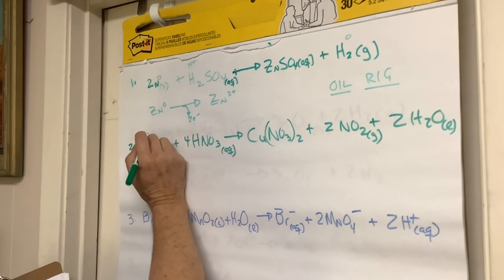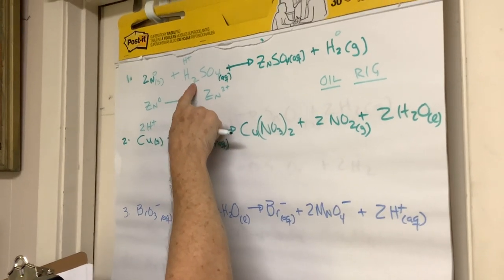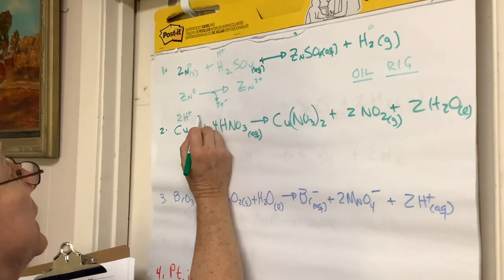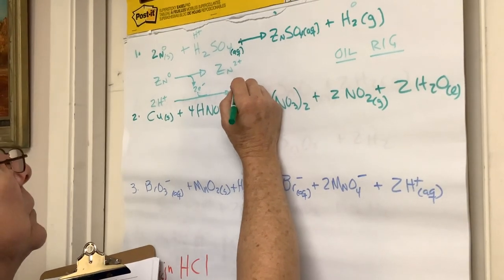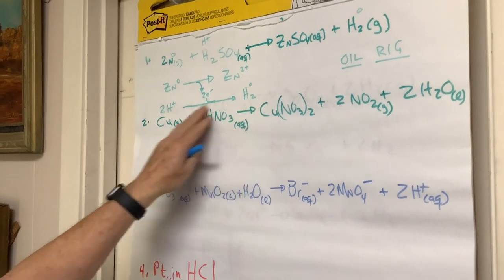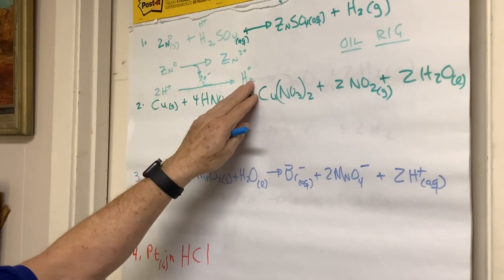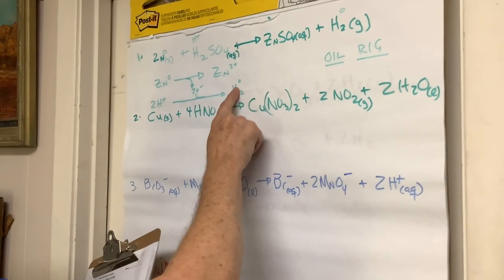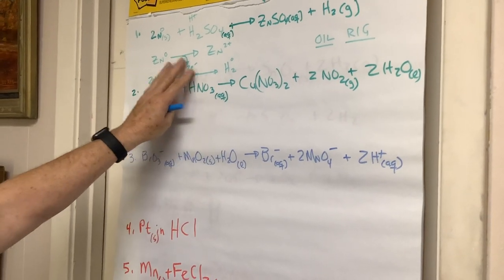Sulfuric acid is a diprotic acid with two dissociable hydrogen atoms. The 2H⁺ picks up two electrons and combines to form diatomic H₂ gas — its elemental state, oxidation number zero. It went from positive to zero, gaining electrons and becoming reduced. Meanwhile, zinc went from zero to Zn²⁺, losing two electrons. So zinc is oxidized and hydrogen is reduced.